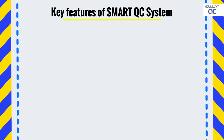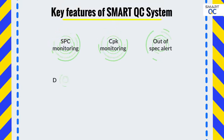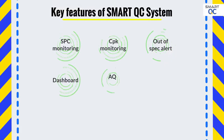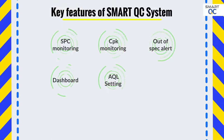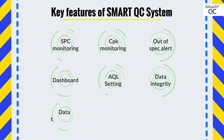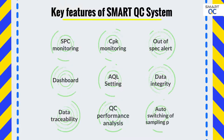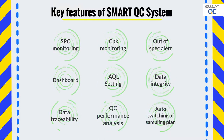The key functions of Smart QC include real-time SPC monitoring, CPK monitoring, out-of-spec alert, real-time dashboard, AQL setting, data integrity, data traceability, QC performance analysis, and auto-switching of sampling plan.